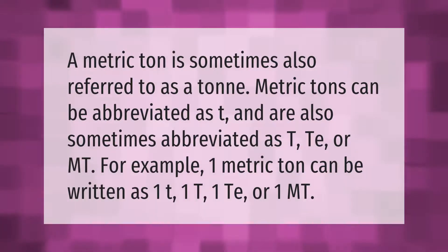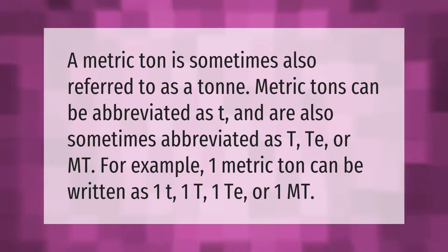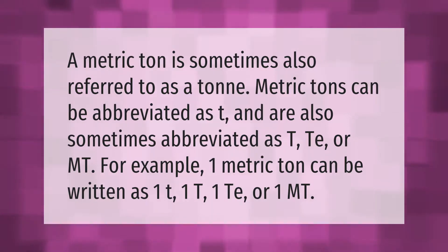A metric ton is sometimes also referred to as a tonne. Metric tons can be abbreviated as t, and are also sometimes abbreviated as MT or t. For example, one metric ton can be written as 1 t, 1 MT, or 1 tonne.